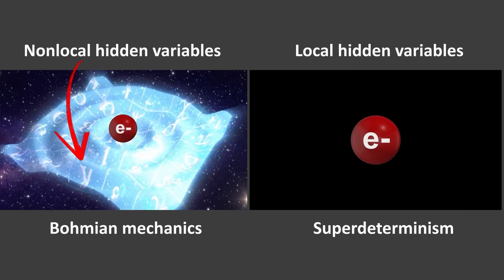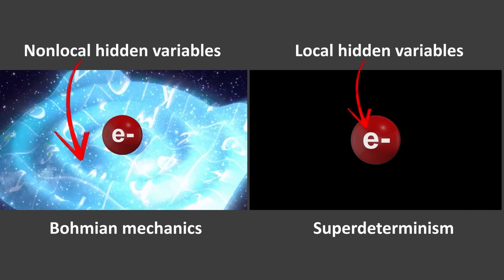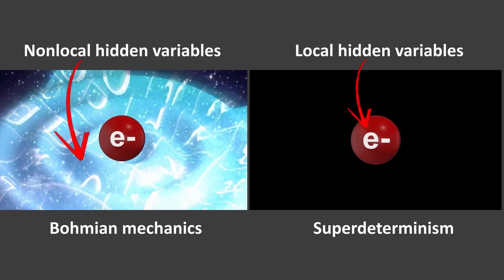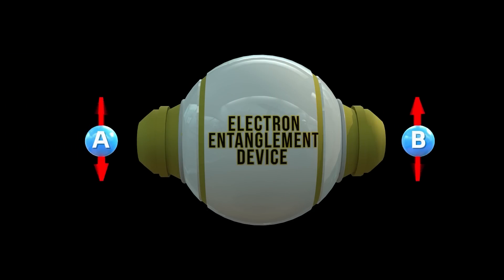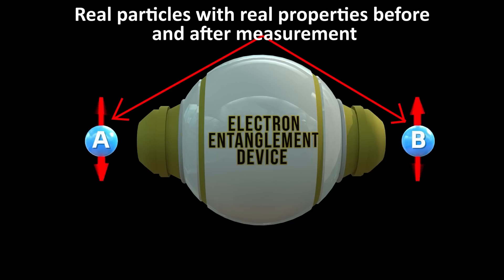Super-determinism saves locality too, since the hidden variables are local, not non-local. It also solves the measurement problem, because the particles are real with real properties, before and after measurement. And of course, it saves determinism too.